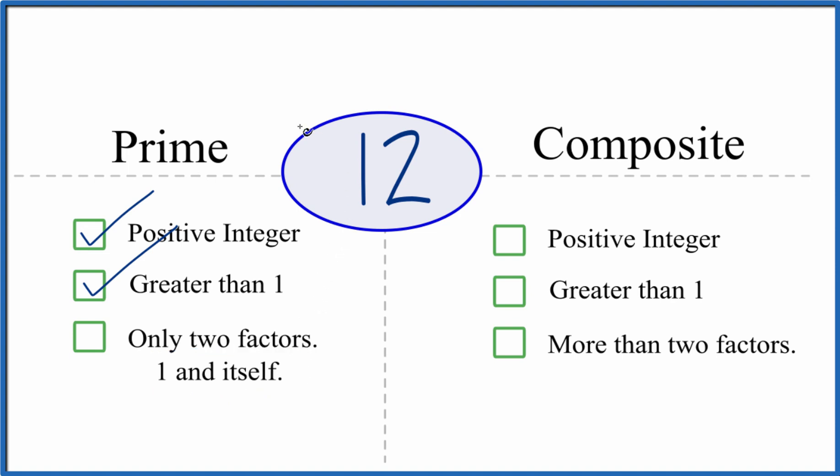So we know that 1 times 12, that would equal 12. But are there any other factors, any numbers that go into 12 evenly? Let's see. 2 times 6, that equals 12. And 3 times 4, that equals 12.